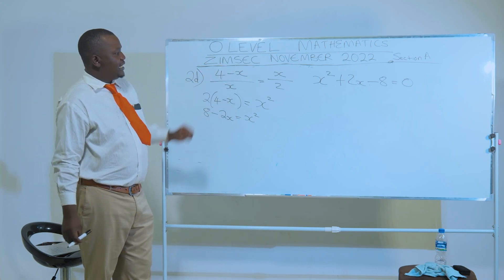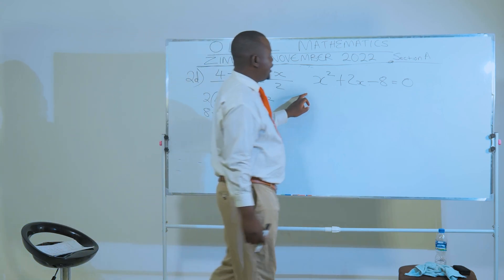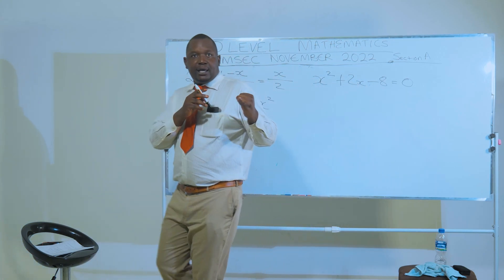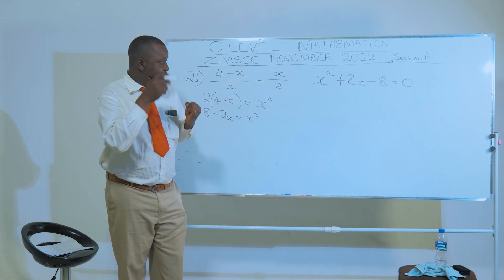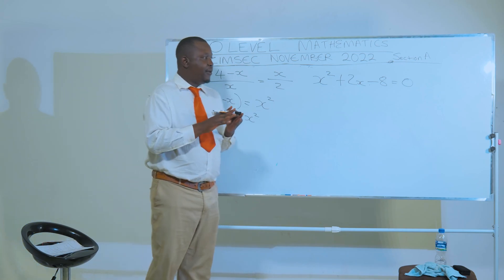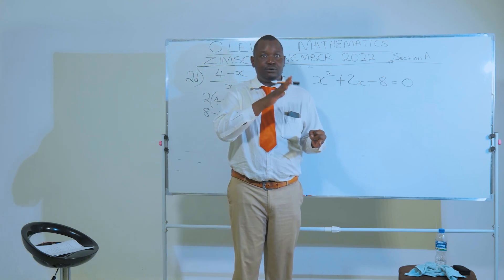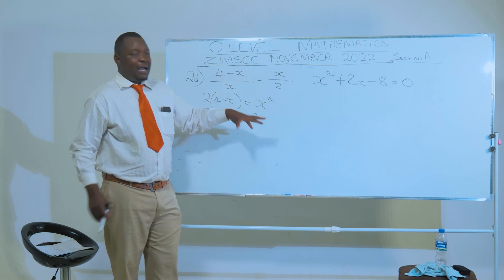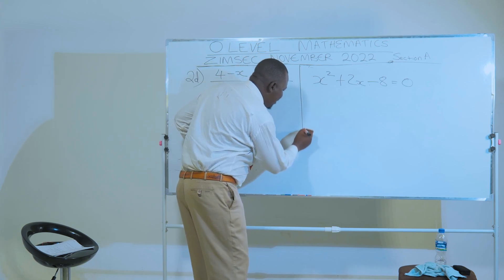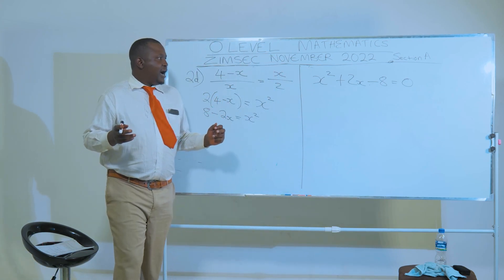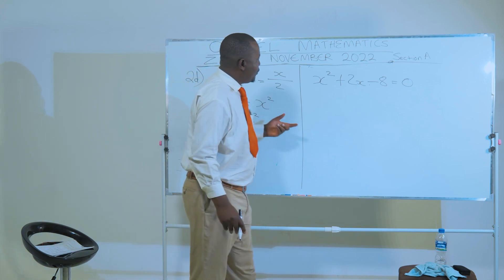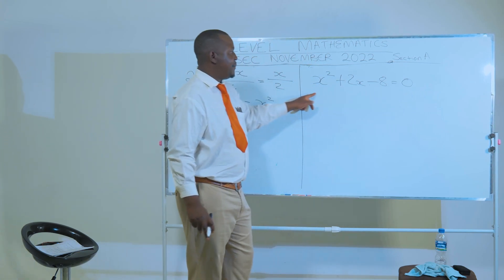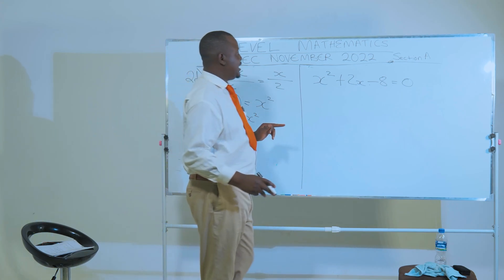Before you solve any quadratic equation, first of all make sure it is equated to zero. So we rearrange to get X squared plus 2X minus 8 equals 0. There are many methods: the factorization method, the quadratic formula X equals minus B plus or minus the square root of B squared minus 4AC over 2A, or completing the square. However, choose the easiest method — here that is factorization.